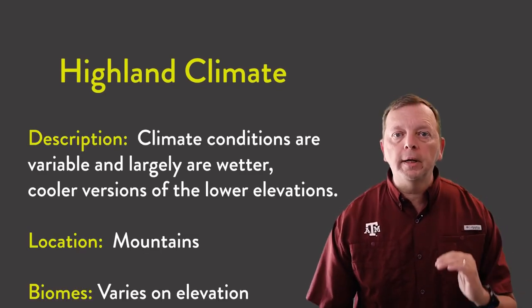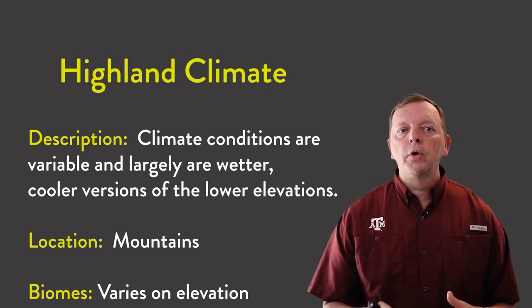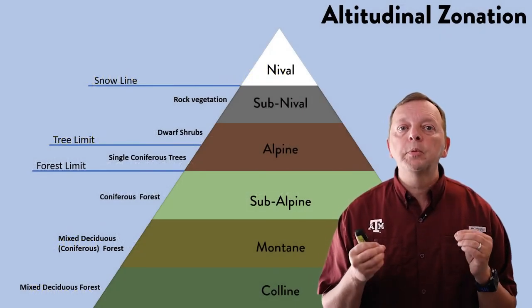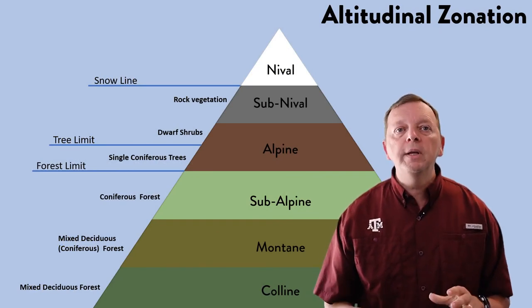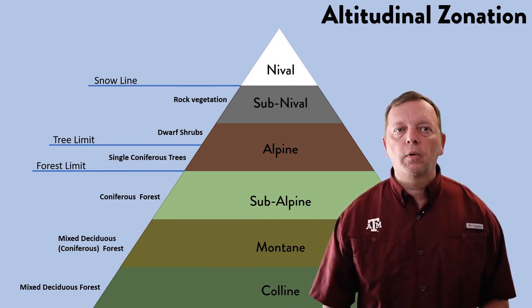The last climate type is the highland climate, added after Koppen created his classification guide. Found in the world's mountains, it isn't really one climate but can be several depending on elevation. Climate conditions change based on elevation but are generally wetter, cooler versions of those found at lower elevations. Because conditions change as you increase in elevation, biomes will vary as well — this is known as altitudinal zonation. On the slopes of one single mountain, you can have many different zones of different biomes, creating different vegetation and crops. So those are the 12 major climate types of the Earth. This also concludes our last lesson on the essentials of physical geography. In our next lesson, we're going to start putting people on the ground and talking about human geography. But until then, keep on learning.